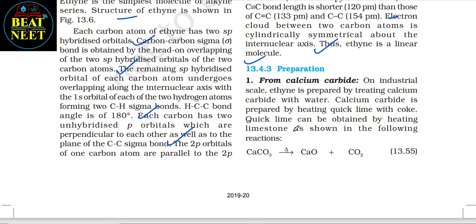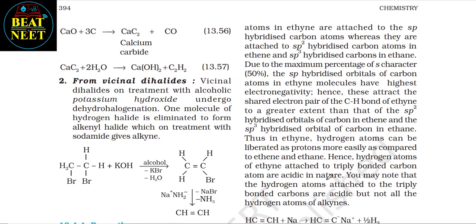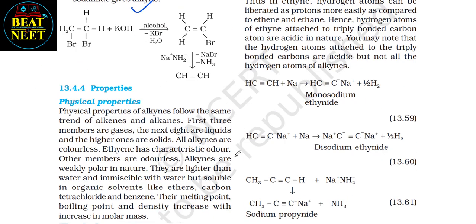13.4.3 Preparation: (1) From calcium carbide — on an industrial scale, ethyne is prepared by treating calcium carbide with water. Calcium carbide is prepared by heating quicklime with coke: CaCO₃ → CaO + CO₂; CaO + 3C → CaC₂ + CO; CaC₂ + 2H₂O → Ca(OH)₂ + C₂H₂. (2) From vicinal dihalides — vicinal dihalides on treatment with alcoholic KOH undergo dehydrohalogenation; one molecule of hydrogen halide is eliminated to form a vinyl halide, which on treatment with sodamide gives alkyne.